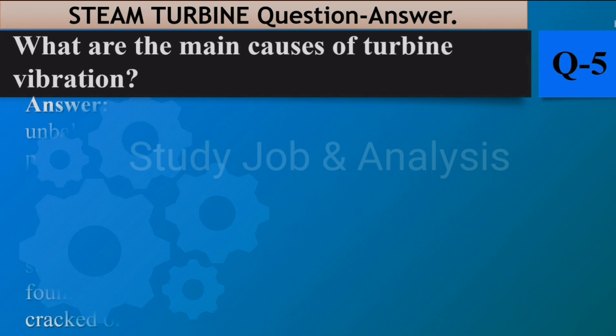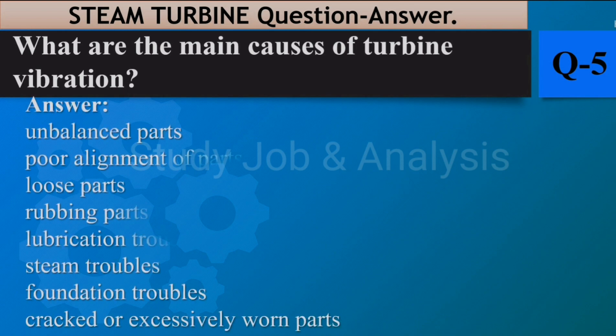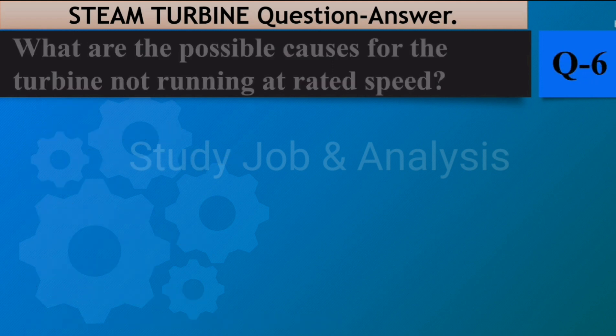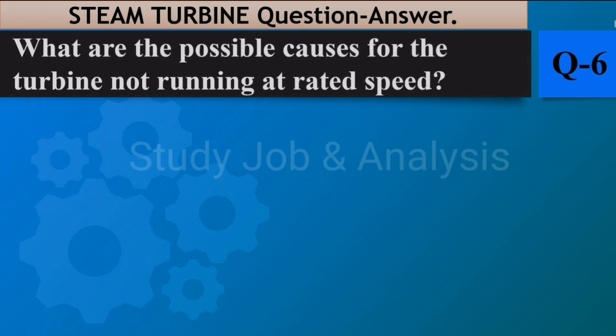Question number five: What are the main causes of turbine vibration? Answer: Unbalanced parts, poor alignment of parts, loose parts, rubbing parts, lubrication troubles, steam troubles, foundation troubles, and cracked or excessively worn parts.